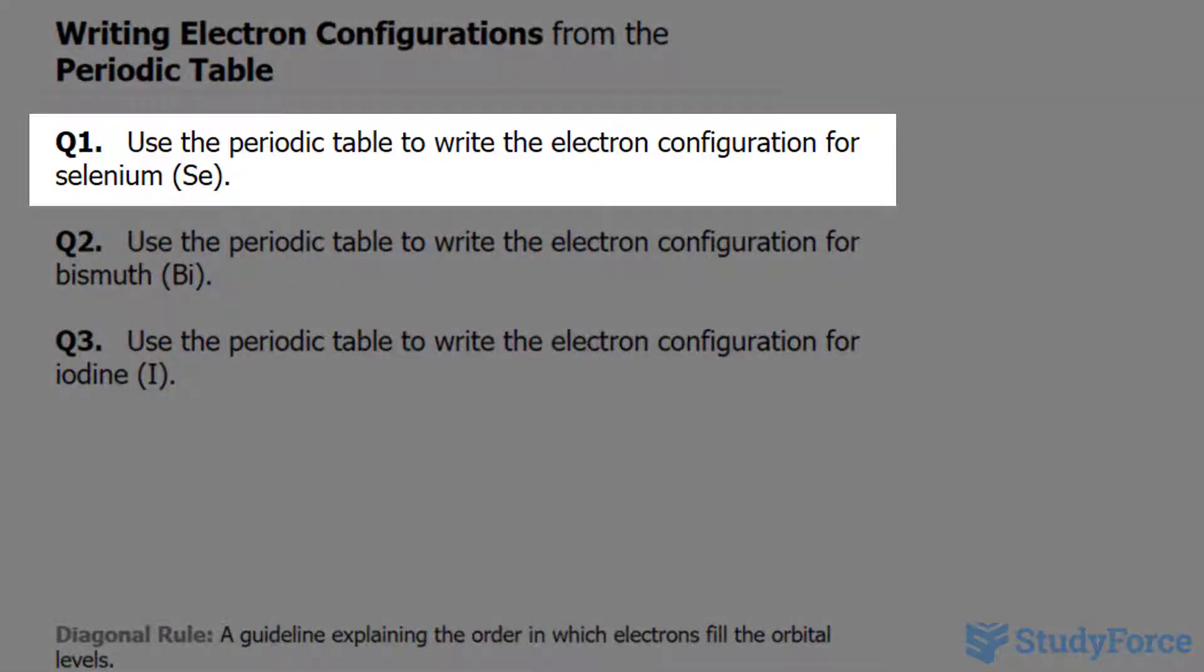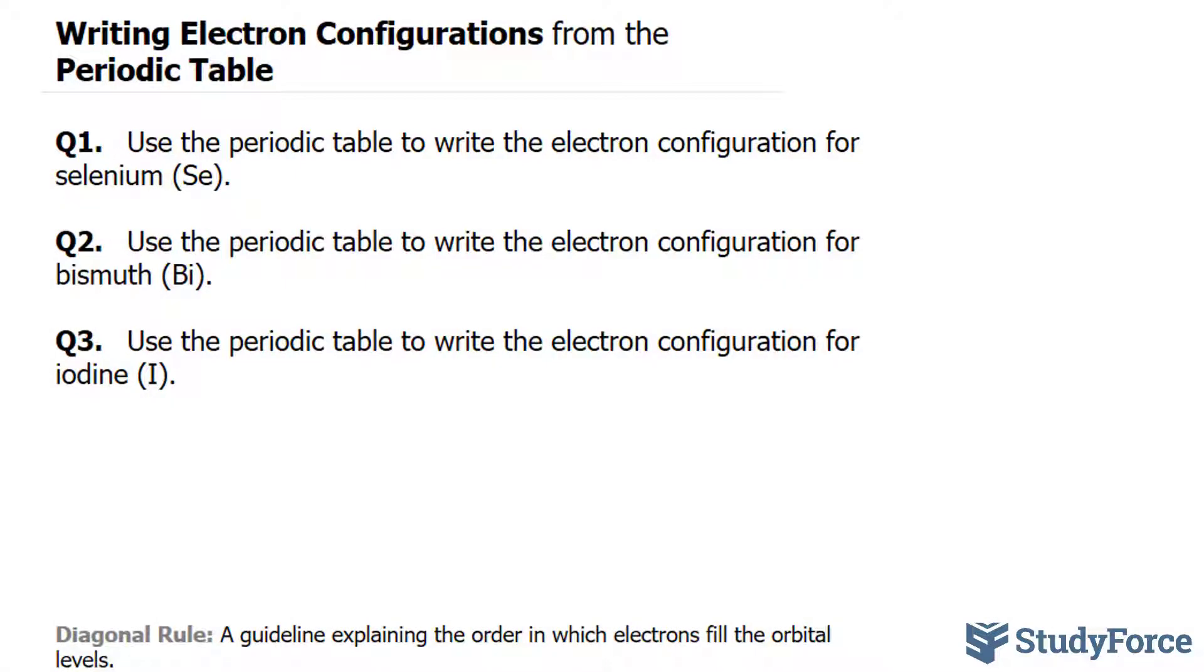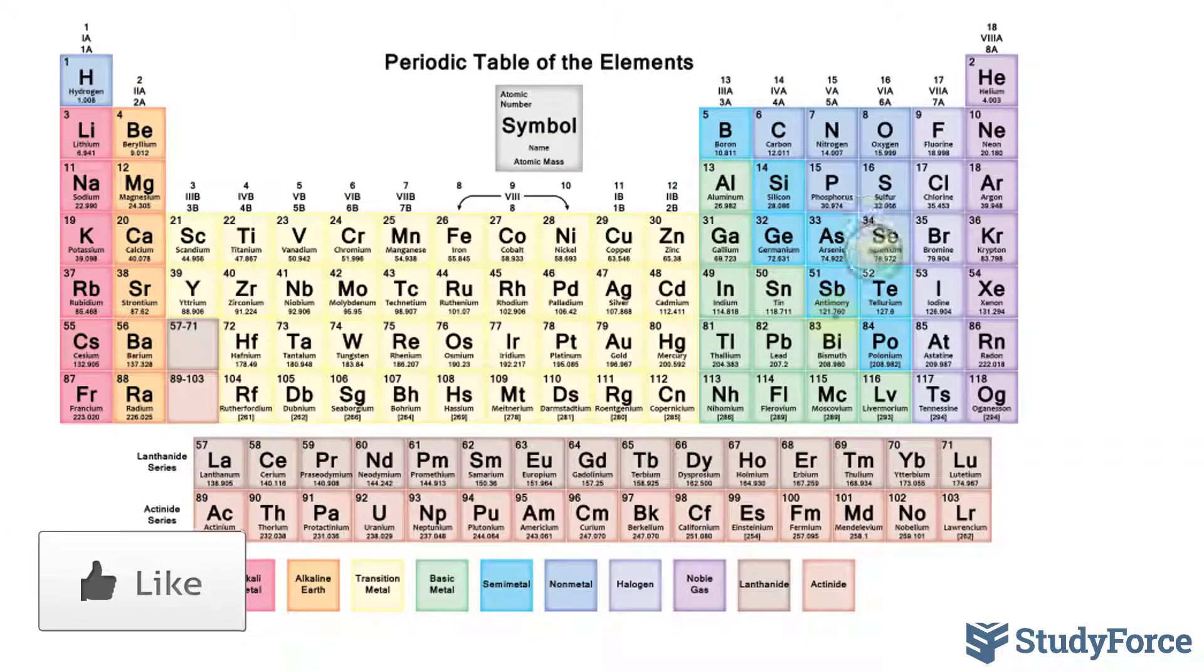The question reads: use the periodic table to write the electron configuration for selenium. Right from the get-go, selenium has an atomic number of 34, which means it has 34 electrons. The noble gas that precedes selenium in the periodic table is argon. If we take a look at the periodic table, selenium is right here, and the noble gas that precedes it is argon.